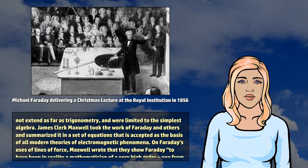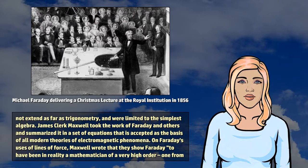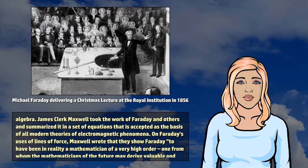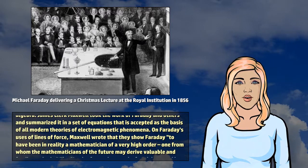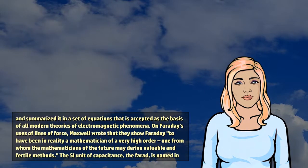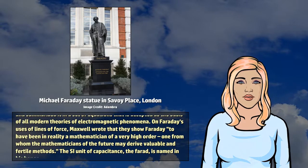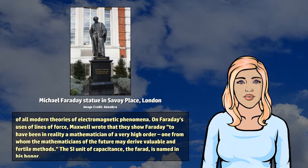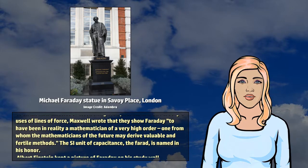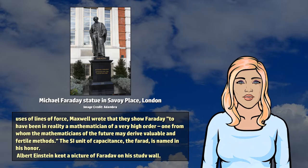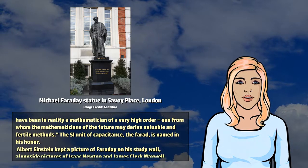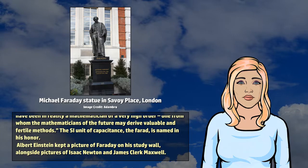James Clerk Maxwell took the work of Faraday and others and summarized it in a set of equations that is accepted as the basis of all modern theories of electromagnetic phenomena. On Faraday's uses of lines of force, Maxwell wrote that they show Faraday to have been in reality a mathematician of a very high order, one from whom the mathematicians of the future may derive valuable and fertile methods.